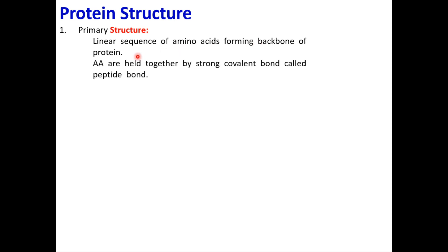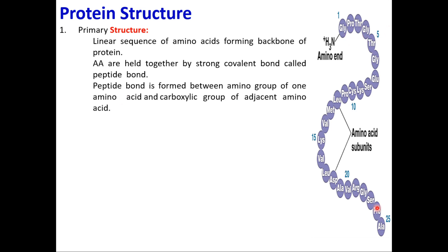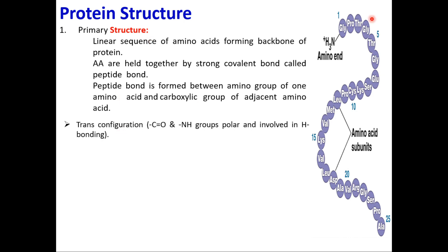Amino acids are held together by a strong covalent bond called the peptide bond. The peptide bond is formed between the amino group of one amino acid and the carboxylic group of the adjacent amino acid. For example, in a 25-amino-acid protein, the start is the N-terminal and the end is the C-terminal. Amino acids in the peptide bond adopt a trans configuration — one amino group is up and the carboxylic group is trans.